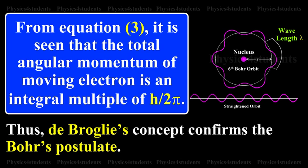From equation 3, it is seen that the total angular momentum of the moving electron is an integral multiple of h/2π. Thus, de Broglie's concept confirms Bohr's postulate.